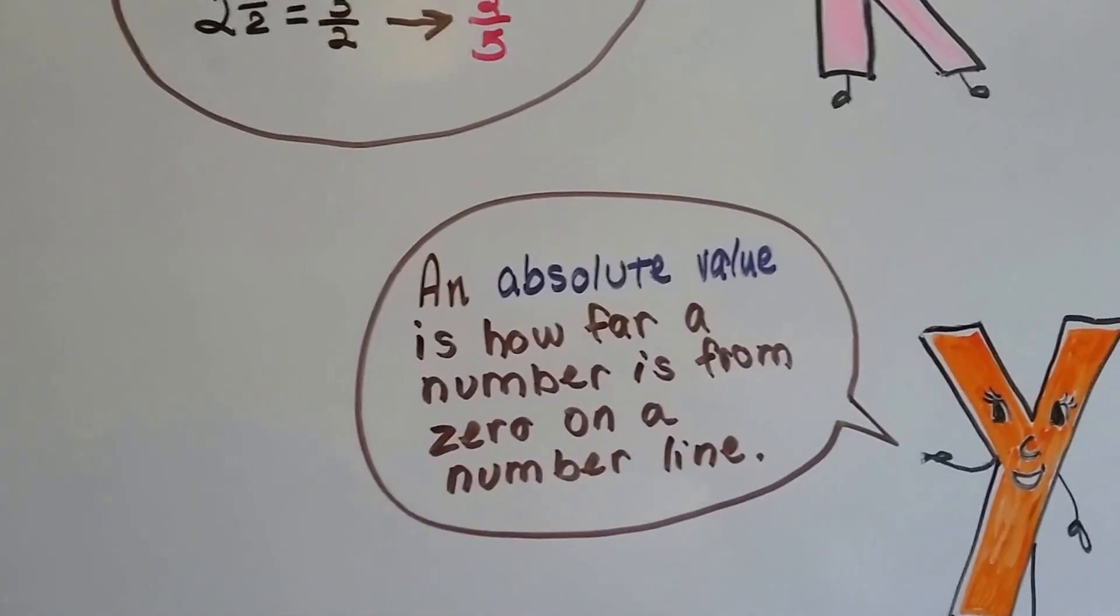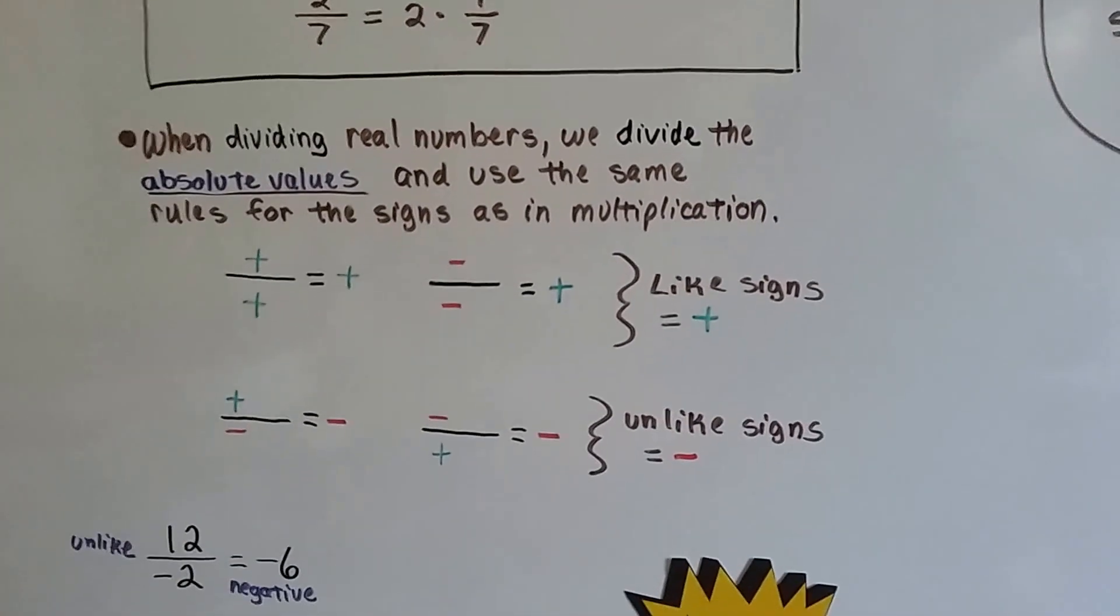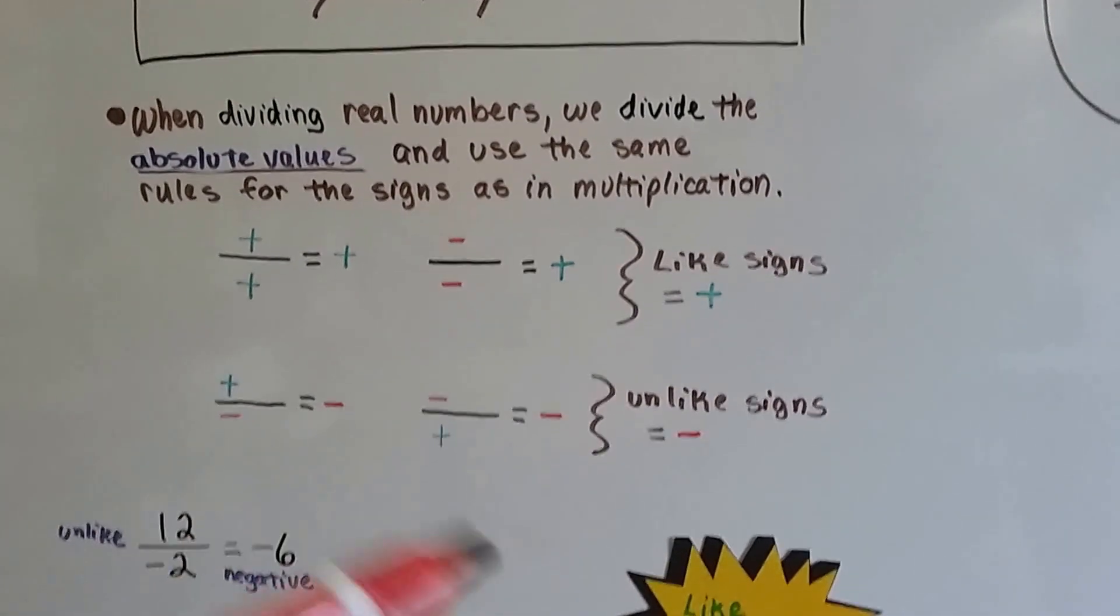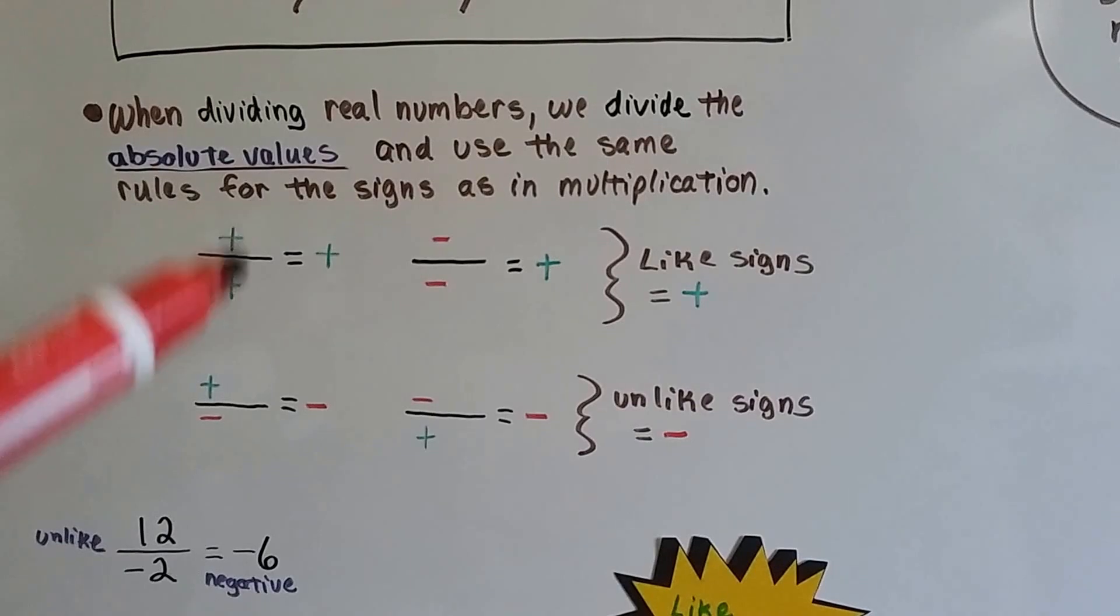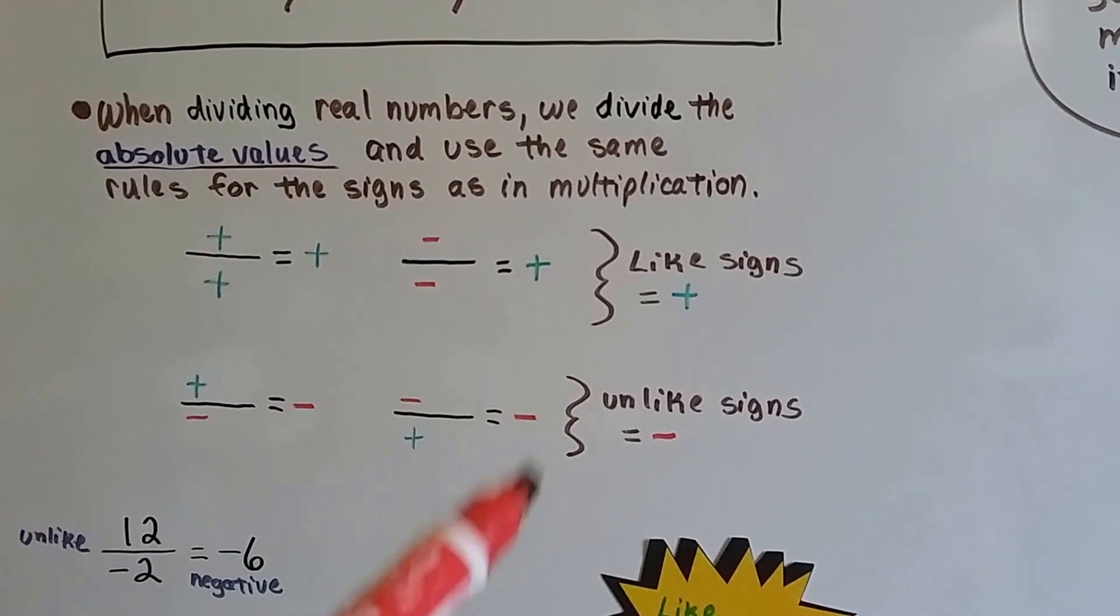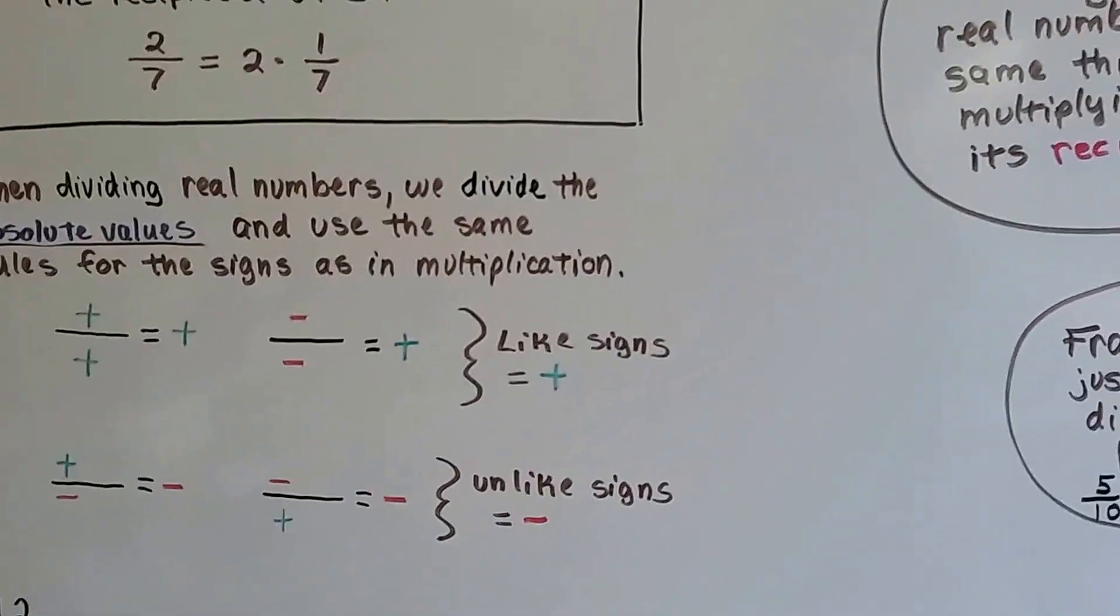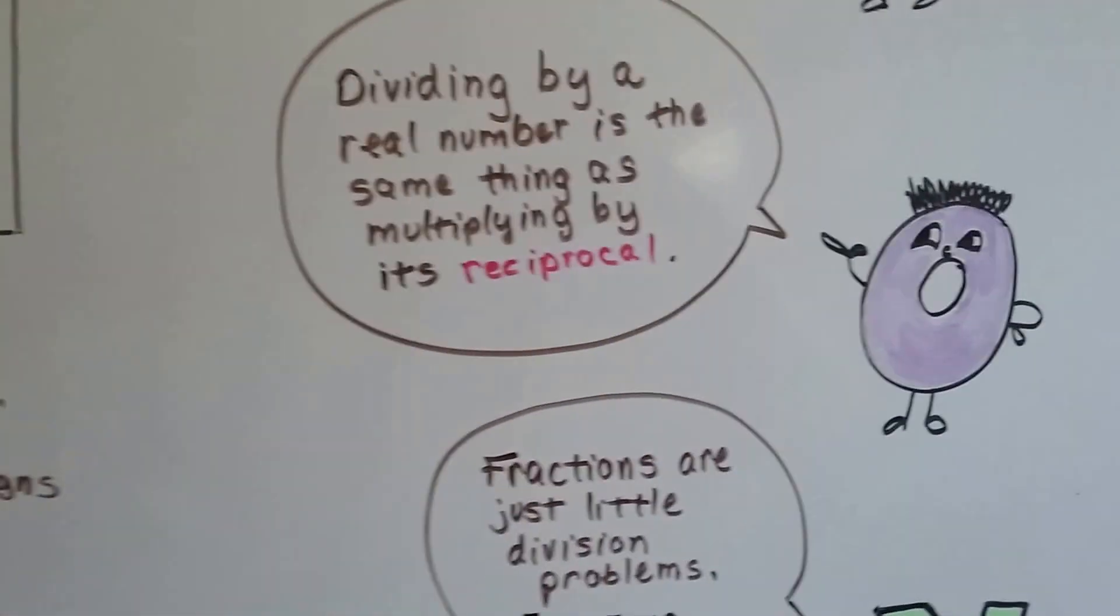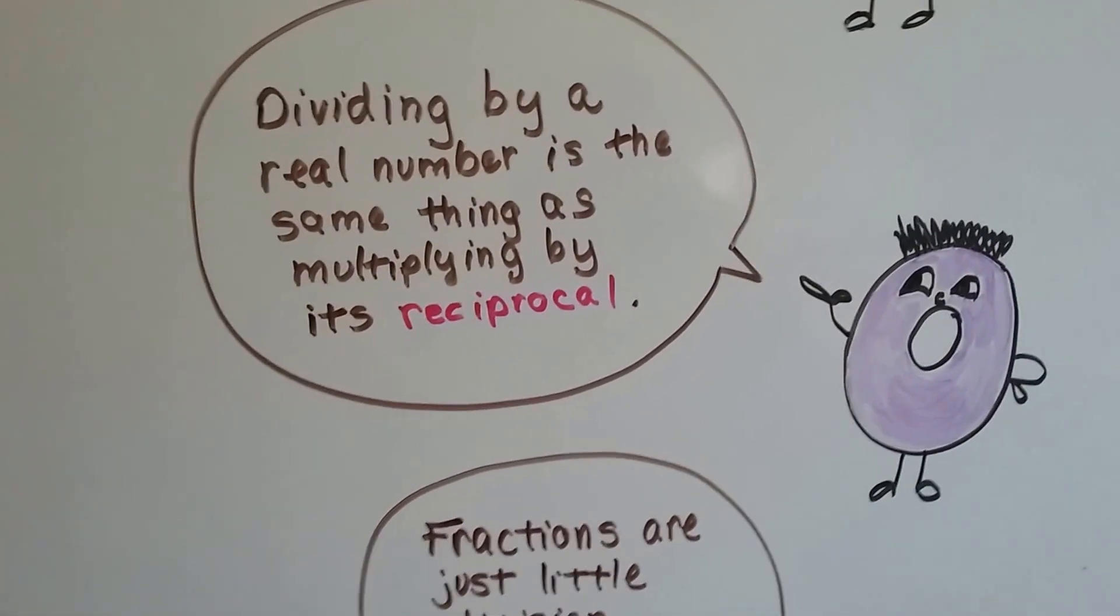Remember, an absolute value is how far a number is from 0 on the number line. When it's said that we're dividing real numbers, we divide the absolute values. Just take away the signs, do the division, and then follow these rules to know what the quotient's going to be. Like signs are positive. Unlike signs are negative. And dividing by a real number is the same thing as multiplying by its reciprocal, its multiplicative inverse.